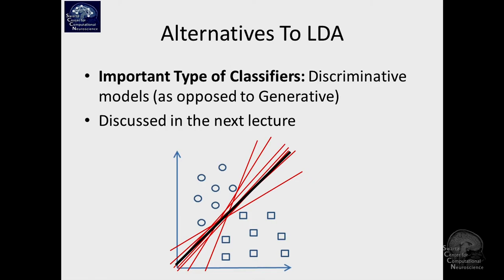The third big alternative classifier is one that directly optimizes the location of the hyperplane or the parameters of the mapping from data space to a feature space to label. We'll discuss these at greater length because they're very powerful methods that also work in large-scale situations. These don't even try to characterize the distribution of the data — they just directly optimize the parameters of the classifier.